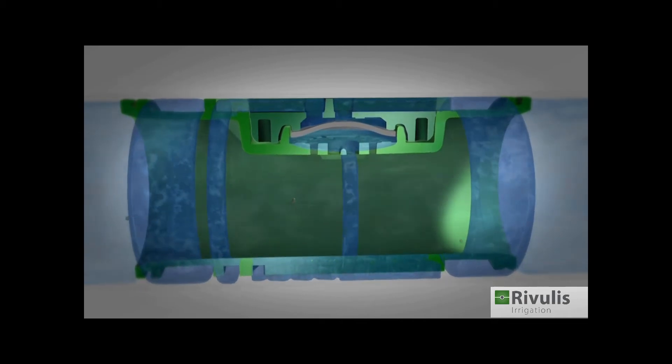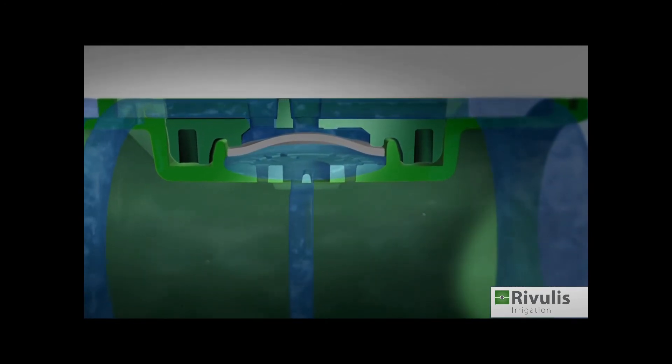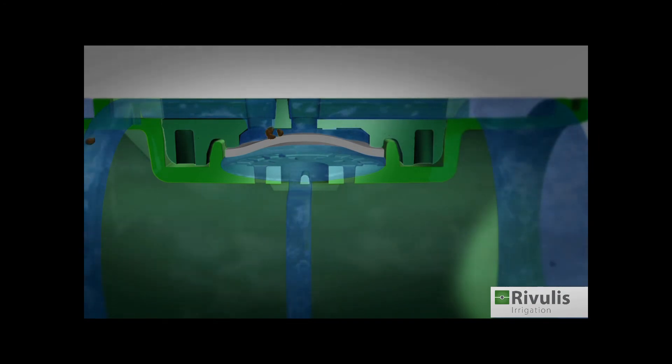When the particles accumulate in the regulating chamber, the self-cleaning mechanism kicks in. The decreased flow rate changes the pressure on the upper side of the diaphragm, pushing it down, expanding the path, and allowing the increased flow to flush out the particles.